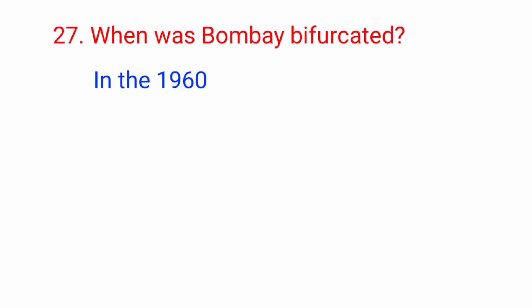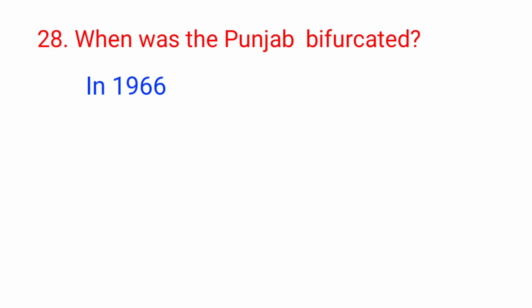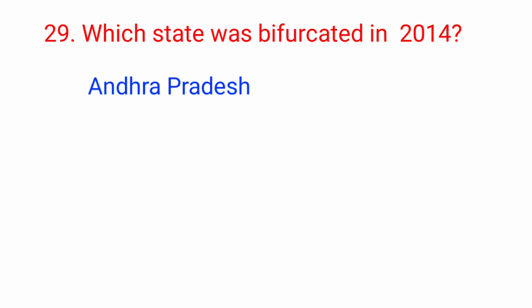Question number 27: When was Bombay bifurcated? Answer: in 1960. Question number 28: When was Punjab bifurcated? Answer: in 1966. Question number 29: Which state was bifurcated in 2014? Answer: Andhra Pradesh.